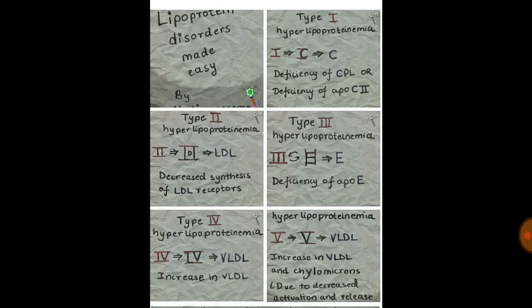Now lipoprotein disorders — types 1 through 5, all are hyperlipoproteinemias. Type 1 is deficiency of LPL or ApoC2. Type 2 involves LDL — two L's in Roman numerals — decreased synthesis of LDL receptors is the pathology. Type 3 involves ApoE deficiency — the Roman numeral III is inverted to resemble an E.